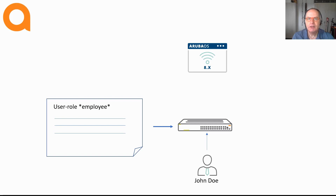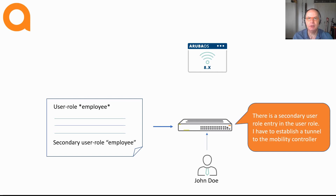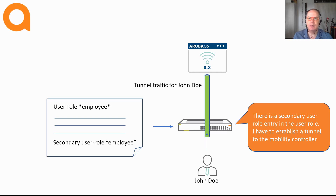This user role can contain a value called the secondary user role. When that user role contains this parameter and value, a Layer 2 GRE tunnel is established to an Aruba Mobility Controller. In other words, the traffic for that client is not handled by the switch anymore, but forwarded to an Aruba Mobility Controller by means of a tunnel.